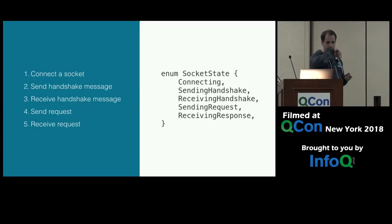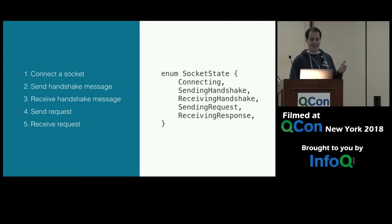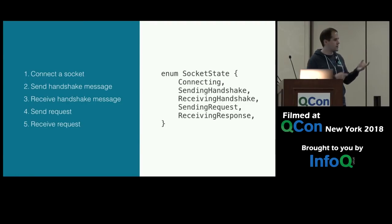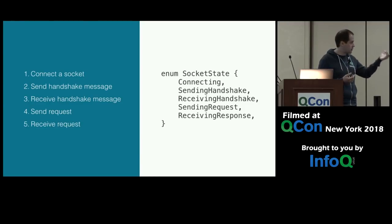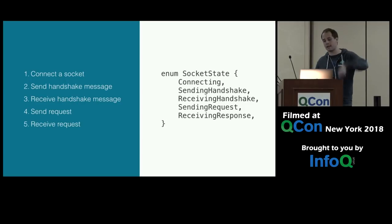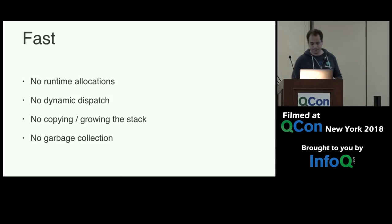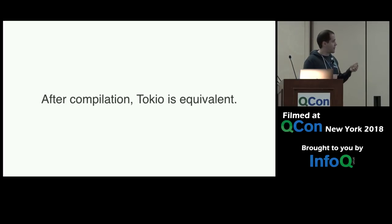If you want to implement a more involved protocol, it gets more complicated. You create some state variable — a Rust enumeration — to track the state of the connection. A socket state is going to be one of several potential values. When you get an event from epoll, you load up the socket's state: what state are you in? Okay, now I have to try to get you to the next state. You do that in a loop again. It's pretty painful, but if you do it, you get a lot of benefits: you can implement that protocol with no runtime allocations, no dynamic dispatch, et cetera. After compiling, Tokio generates equivalent runtime — equivalent process.